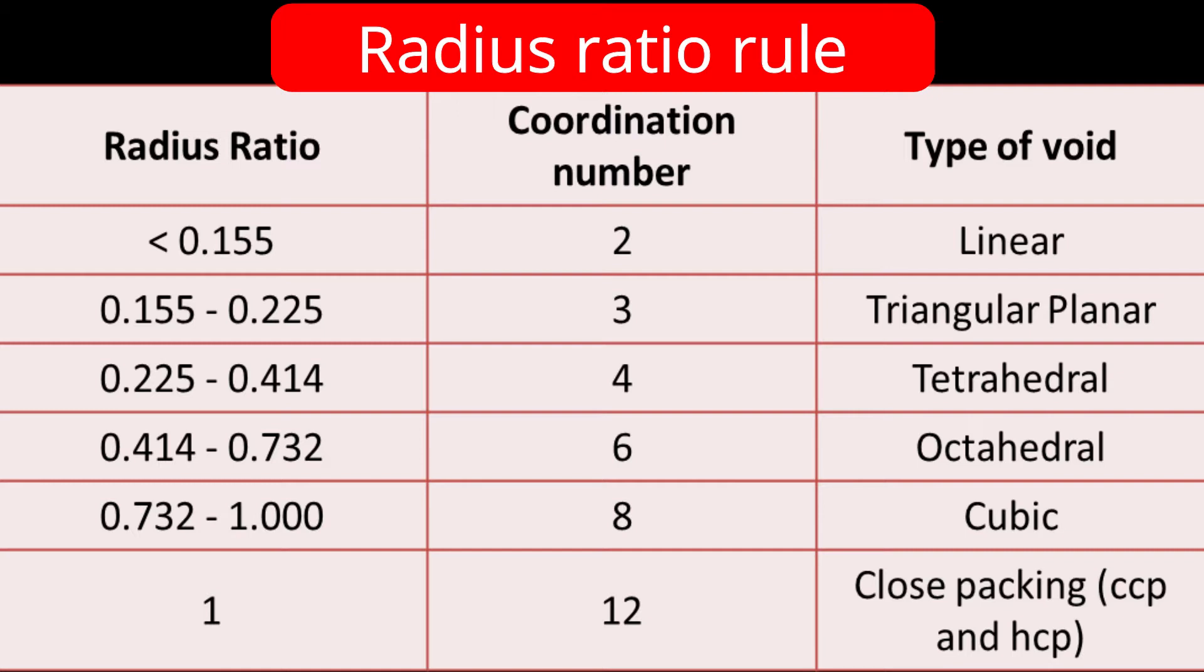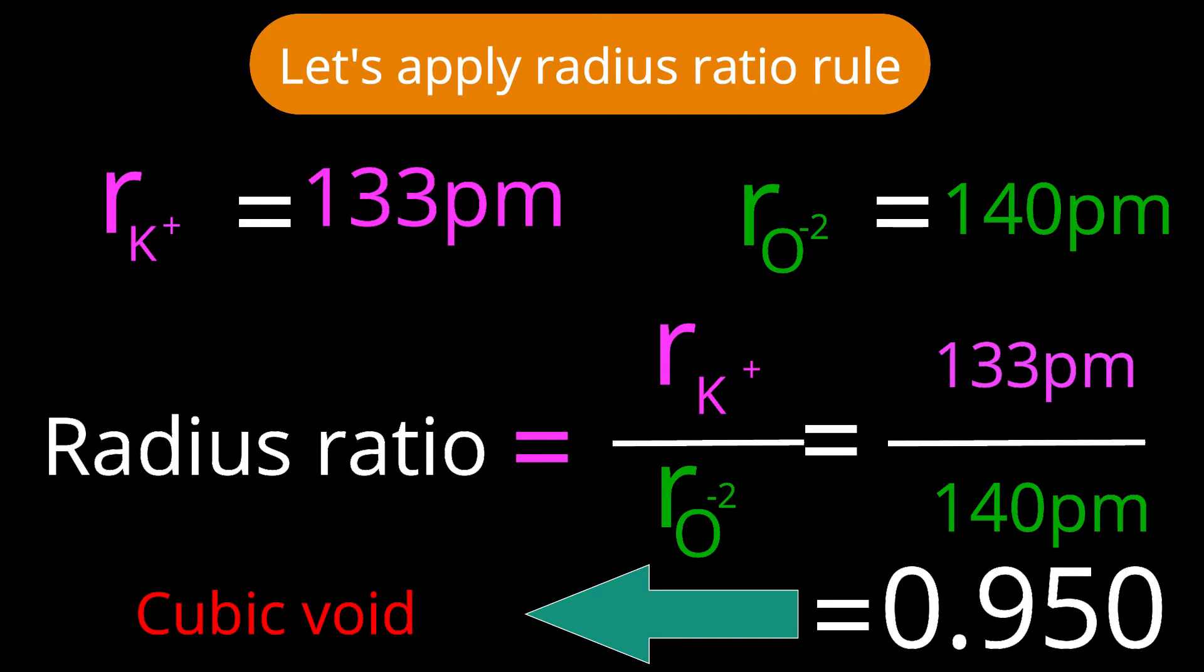In this current structure of potassium oxide K2O, potassium ions have radius 133 picometer and oxide ion has radius 140 picometer. As per our usual concept and calculation, radius ratio will be equal to 133 picometer divided by 140 picometer. Answer is 0.950.